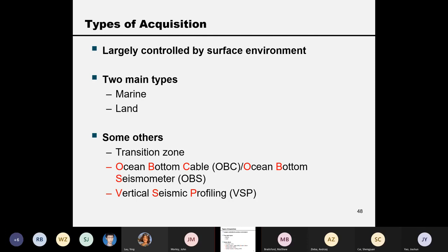In the land environment, if a pressure wave is going up and one going down, they cancel each other, so we use particle velocity instead. In the industry there are two main types of acquisition: marine and land.